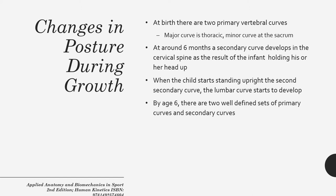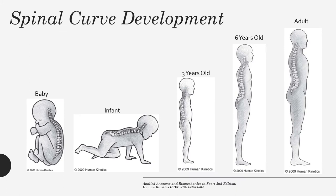Next, let's talk about how posture changes as we grow. When an individual is born, there are two primary vertebral curves: the thoracic curve and a minor curve at the sacrum. Around six months of age, a secondary curve begins to develop in the cervical spine as an infant learns to hold their head up. As the child starts to stand and move upright, the second secondary curve — the lumbar curve — starts to develop. By around age six, there are two well-defined sets of curves: primary curves at the thoracic and sacrum, and secondary curves at the cervical and lumbar regions, together forming an S-shape.